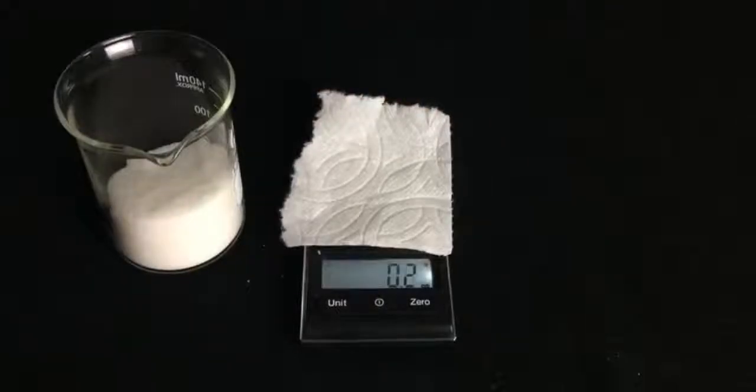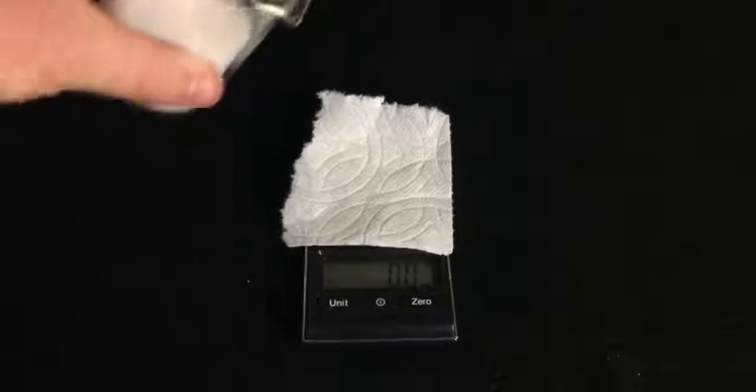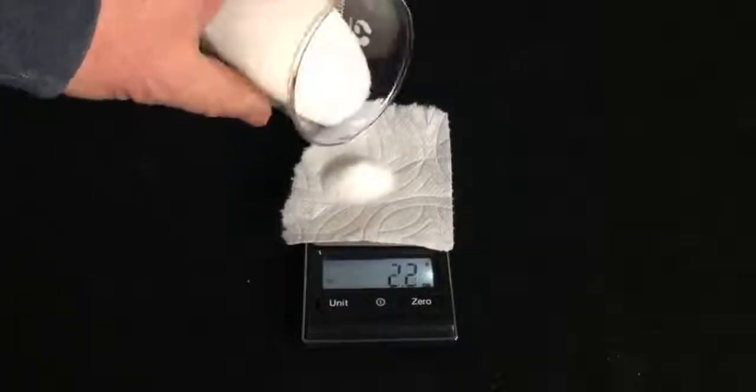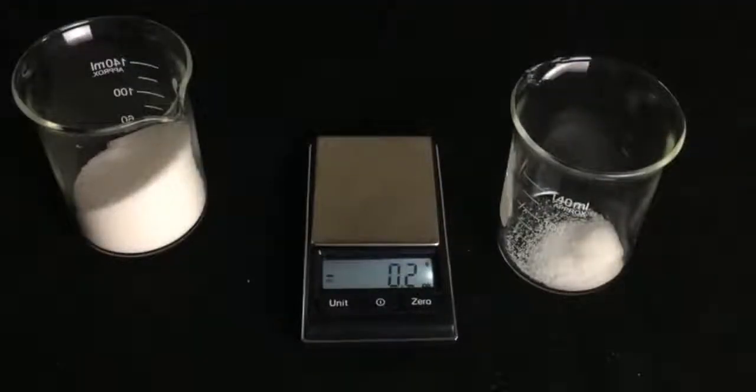So I place a little piece of paper on the scale to hold my sample, zero the scale, then add some sugar until the scale reads precisely 2.5 grams. There we go. Now I place that in my beaker.